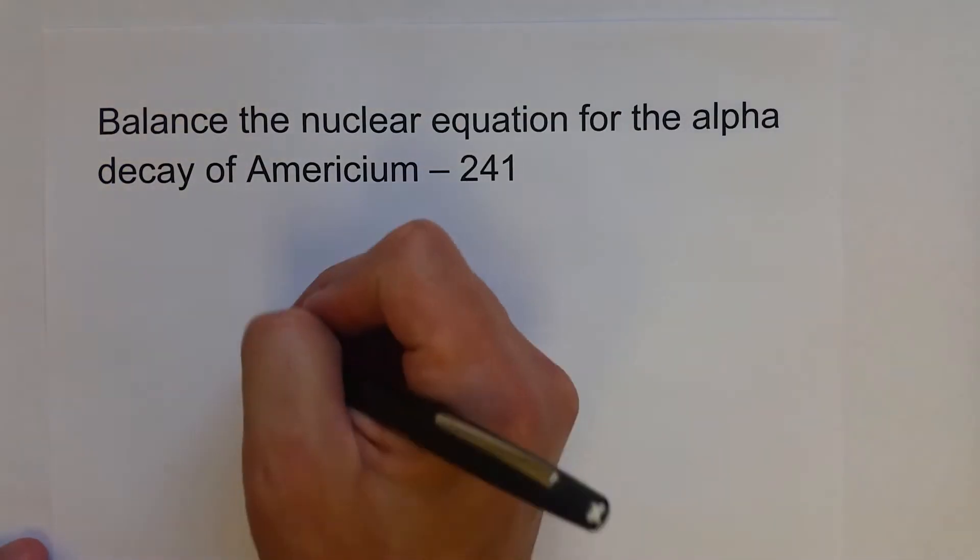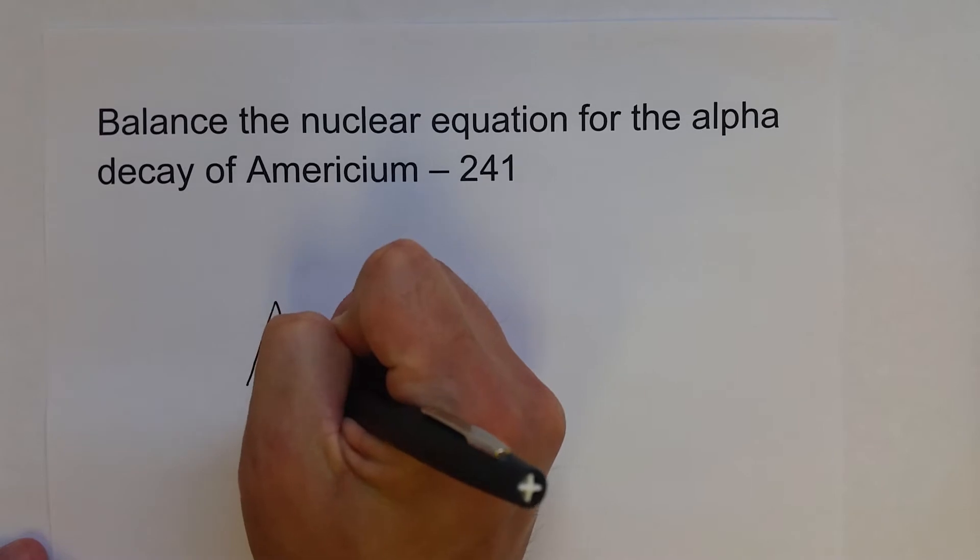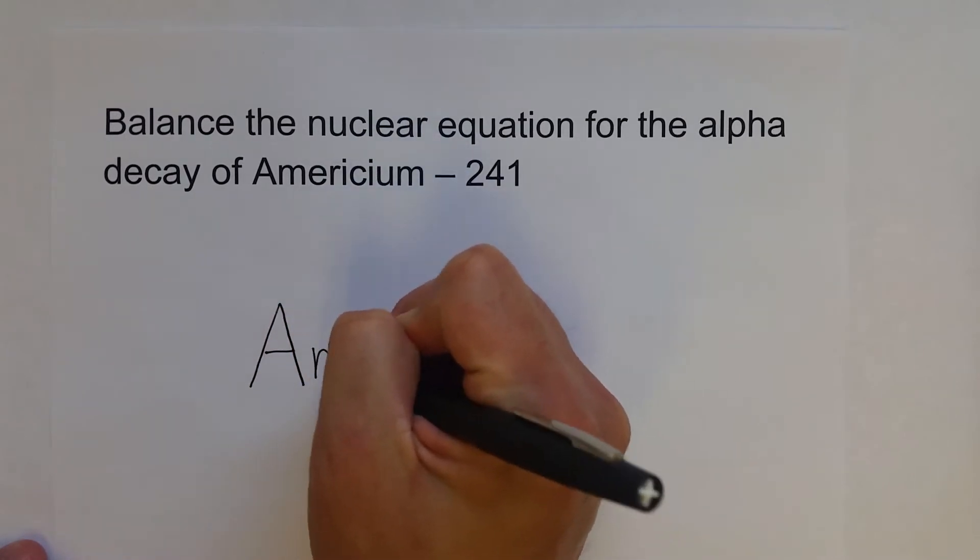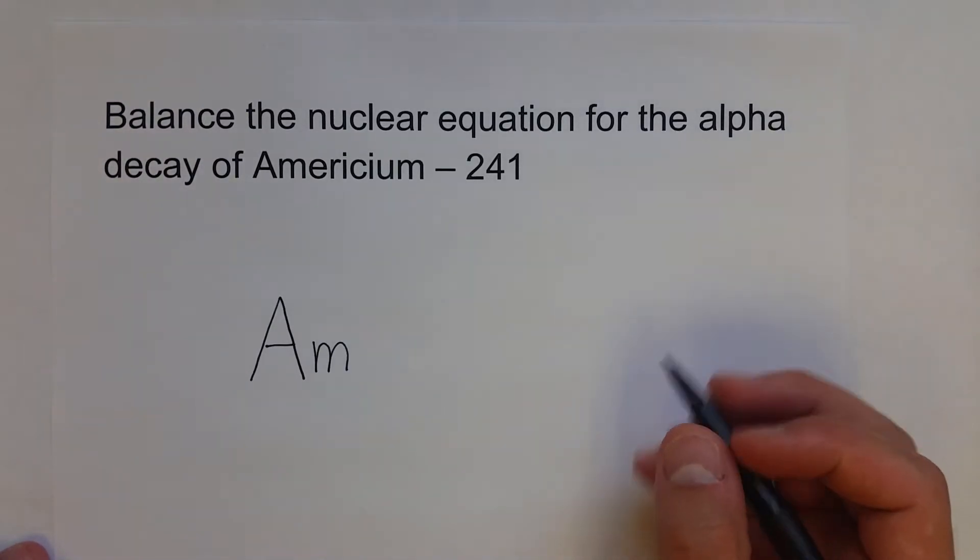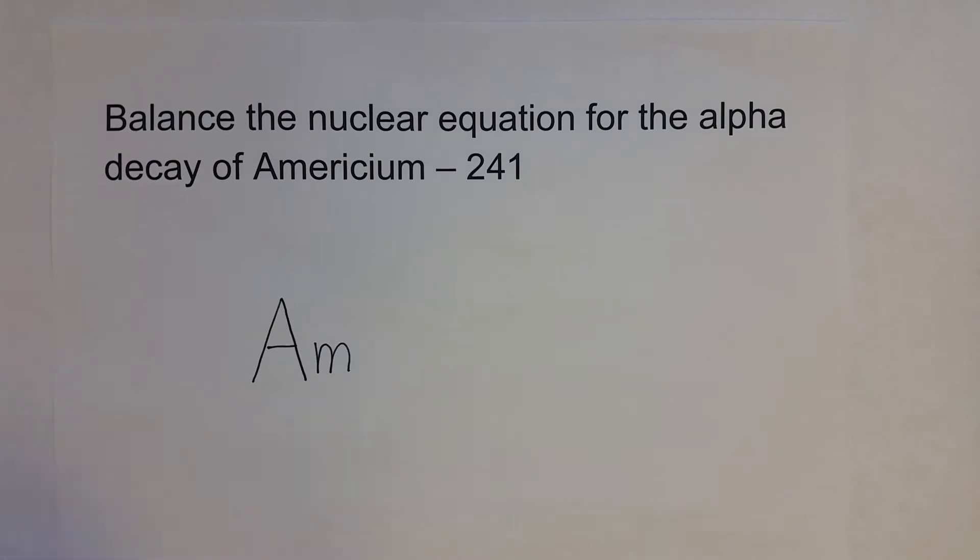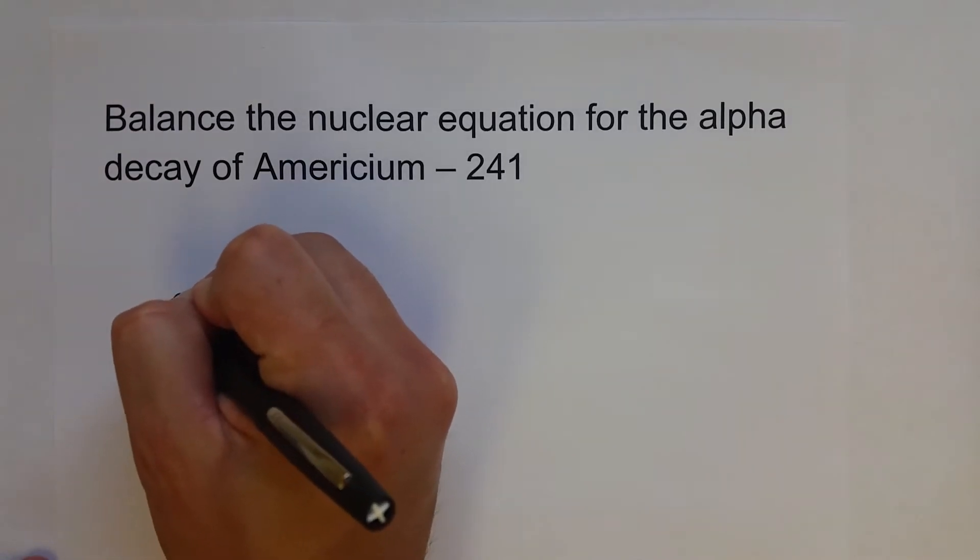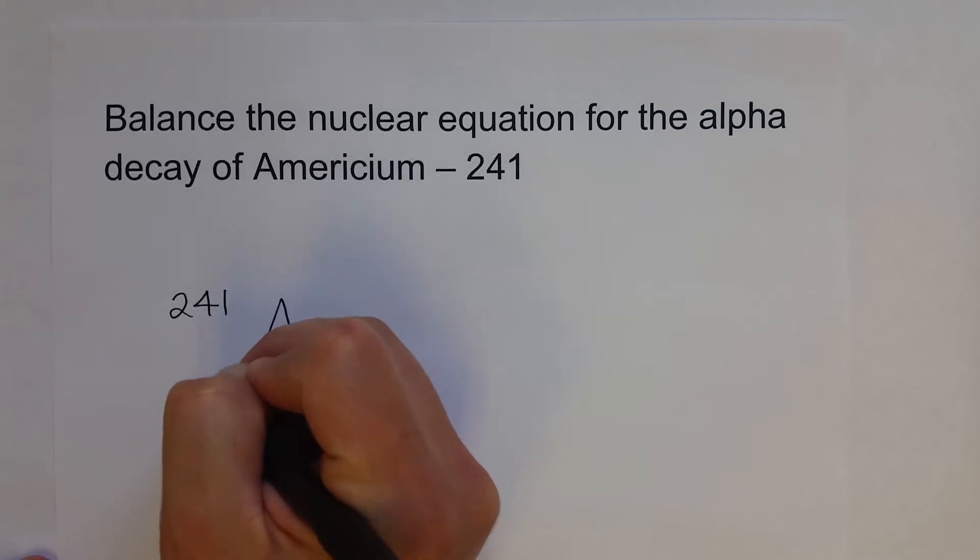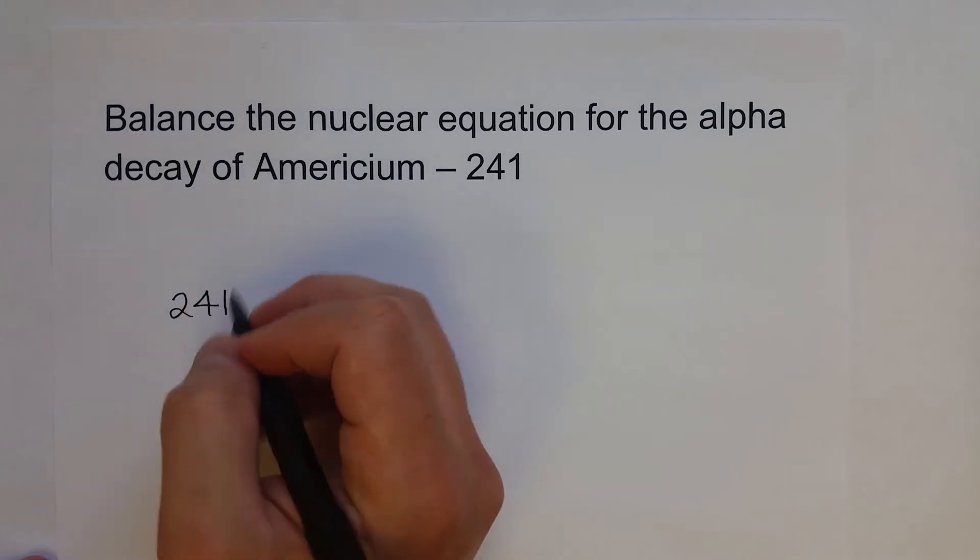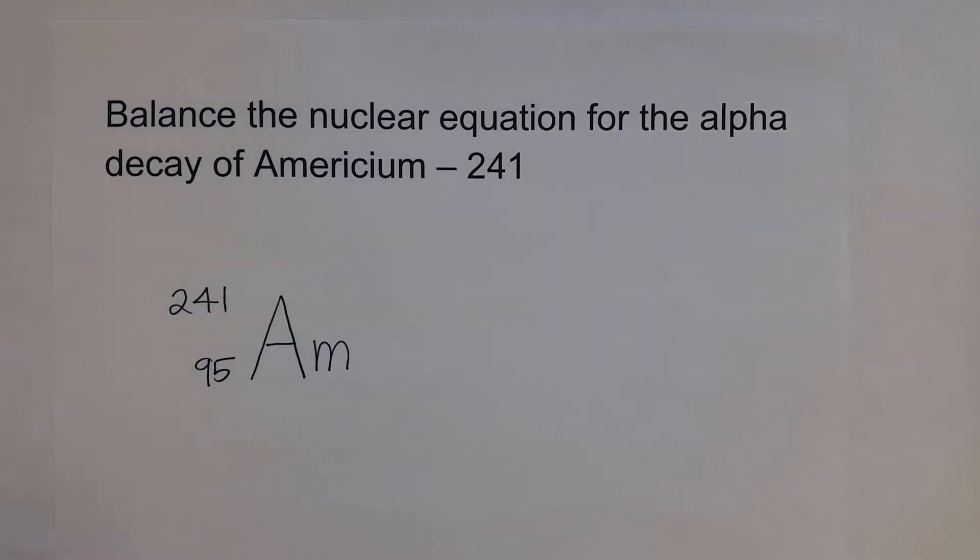Americium-241, the symbol Am, is used in smoke detectors. The alpha particle is what's detected when no smoke is present. If smoke blocks the alpha particles, of course, that's when the smoke alarm will go off. We're going to need to write the atomic symbol for our parent isotope. Americium-241 with 95 protons, so an atomic number of 95.